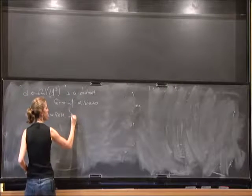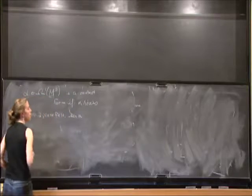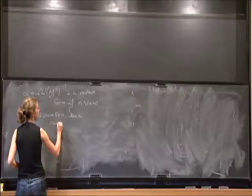This just comes from taking the kernel of this one form at every point. And this two-plane field is actually called a contact structure.